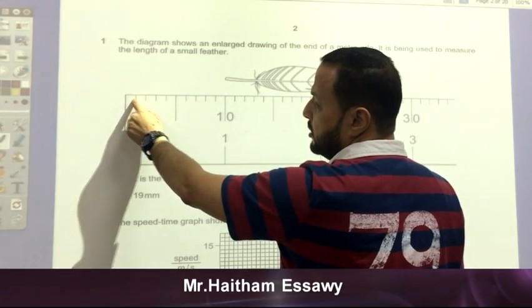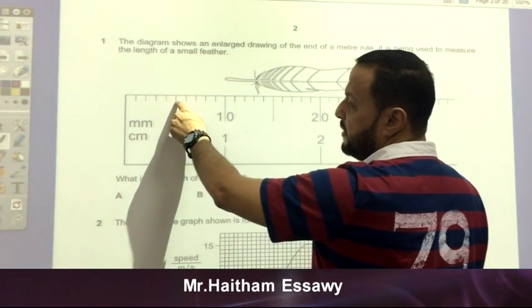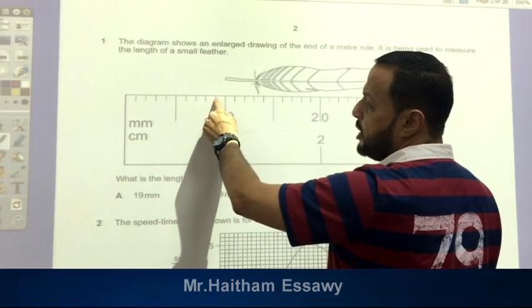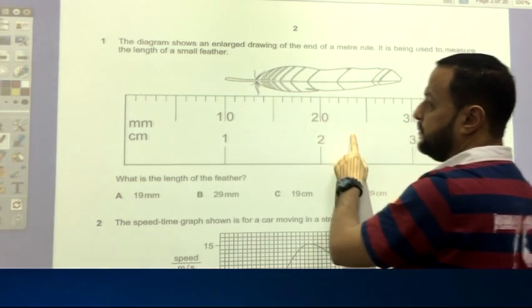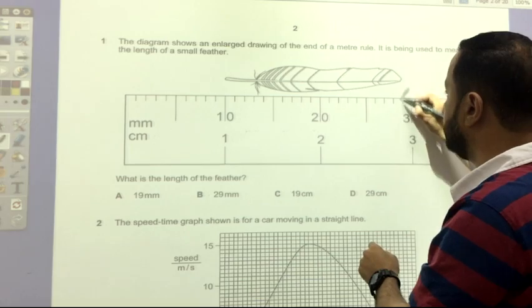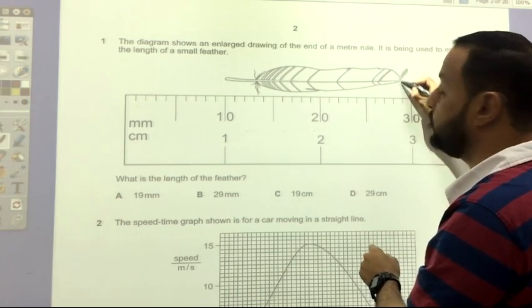This means that this is 1, 2, 3, 4, 5, 6, 7, 8, 9, 10, 11 and so on. So if I want to determine this point, it will be 29.